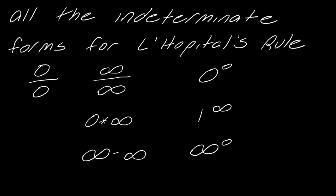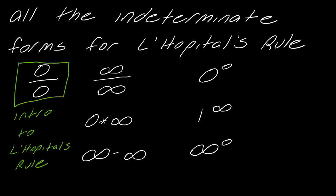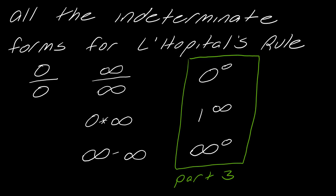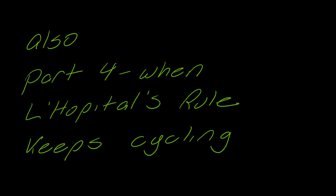If you get any one of these forms, you can either directly use L'Hopital's Rule or manipulate the problem so that you can use it. The 0/0 form is covered in my intro to L'Hopital's Rule. The other forms — 0×∞ and ∞−∞ — are in part two. Indeterminate powers are covered in part three, since they require a very different technique. Part four covers what happens when L'Hopital's Rule just keeps cycling.